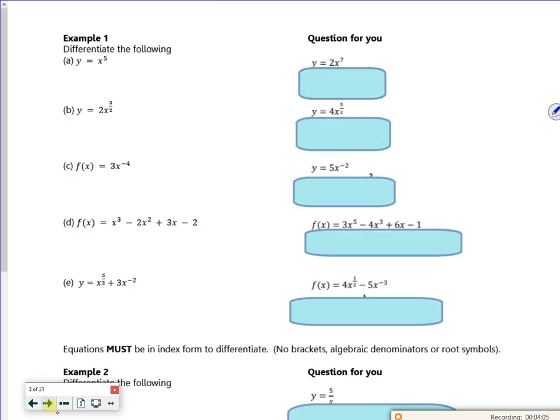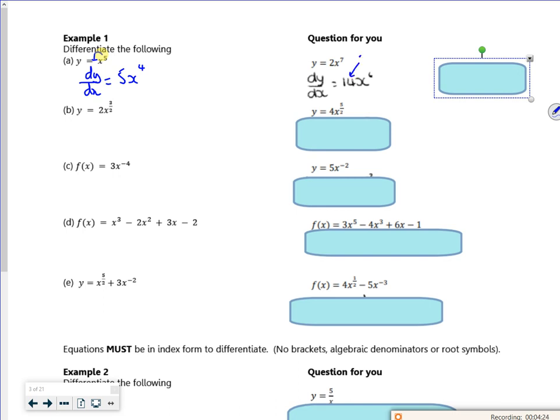So let's have a look then. So let's take the power at the front and take one off the power. So that was 2 times 7, wasn't it? Times by x to the 6.